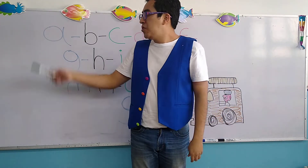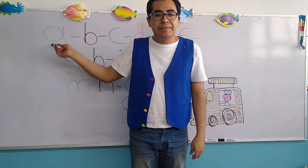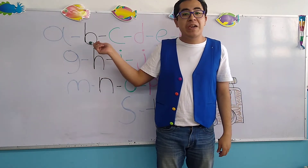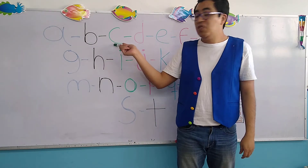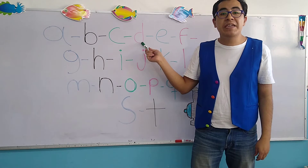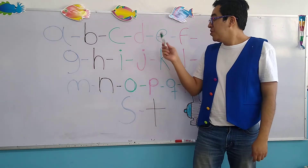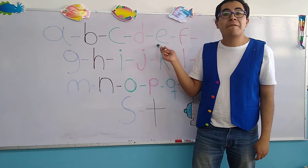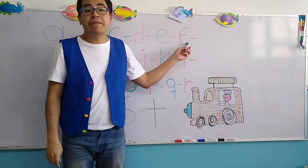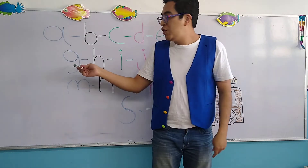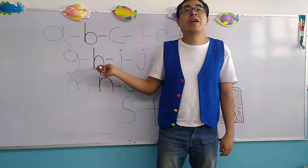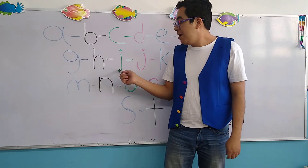Let's begin. Small A — Alonso. Small B — Brenda. Small C — Carlos. Small D — Diego. Small E — Enrique. Small F — Frida. Small G — Gerardine. Small H — Hannah.